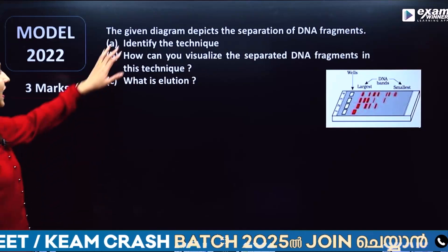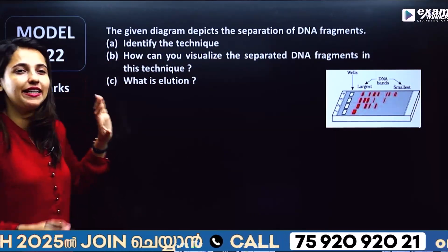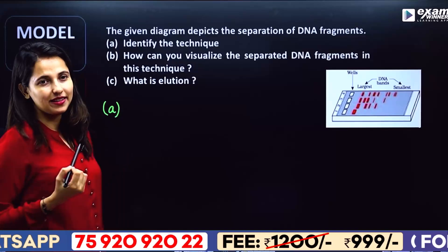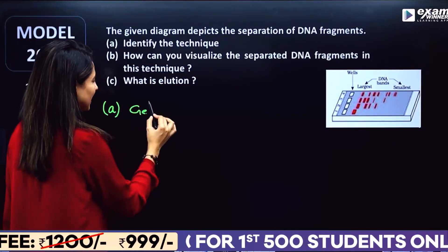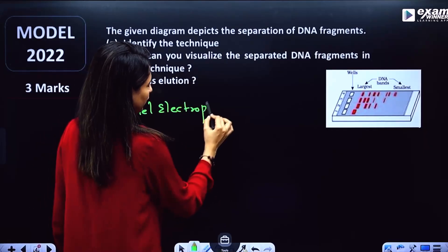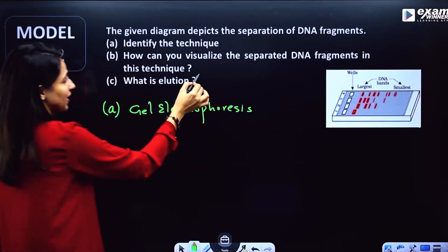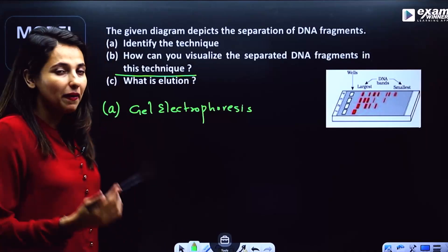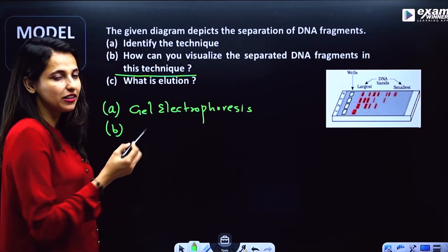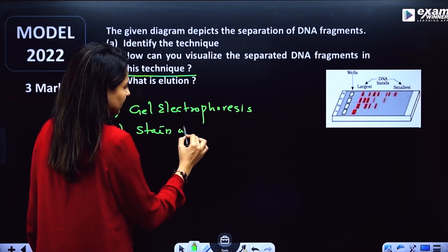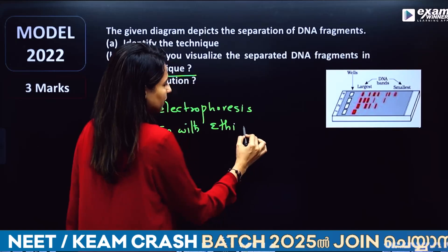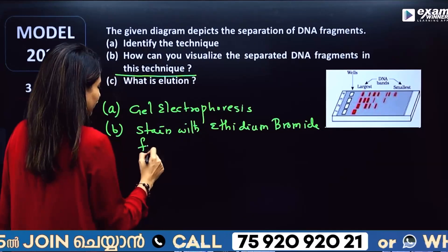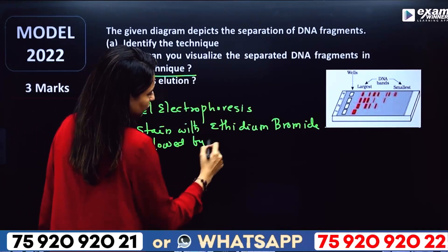The given diagram depicts the separation of DNA fragments. DNA fragments are separated using a technique. The question is: how can you visualize the separated DNA fragments? We stain using ethidium bromide, followed by UV light exposure.